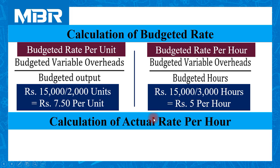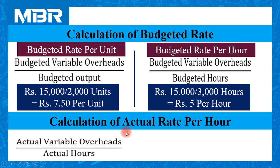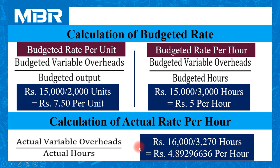Next, let us calculate the actual rate per hour. Formula: actual variable overheads divided by actual hours. Actual variable overheads are rupees 16,000, and actual hours spent are 3,270. So the actual rate per hour is 4.89296636. For 100% perfect calculation I have taken the full number of digits — if you consider only two digits there may be some variation in your answer, so it is advisable to use as many digits as possible.